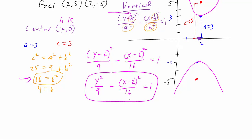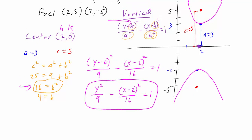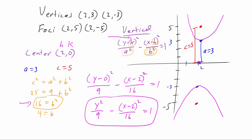Once you have the standard form, if you want to go a step further, we know the center is (2, 0), we know a = 3, and we know b = 4. So realize, if you're trying to find the standard form of the equation, the key parts you need to find are h and k — the center — the a value, and the b value. The c value helps you find b.